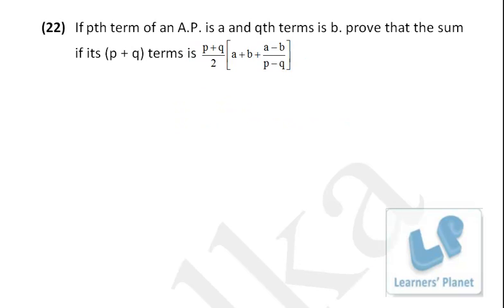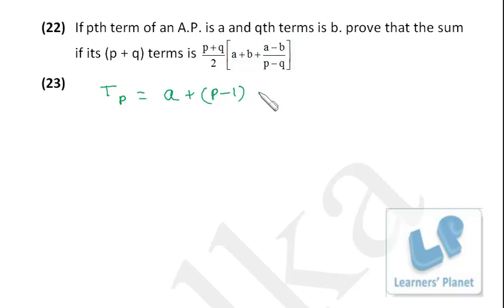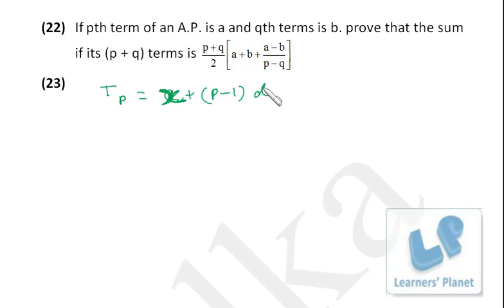If the pth term of an AP is a and qth term is b, prove that the sum of its (p+q) terms is the given expression. Now, the pth term means t_p = (first term) + (p−1)d, where d is the common difference. Since a is already used for the pth term, it cannot also be the first term, so I take the first term as x.